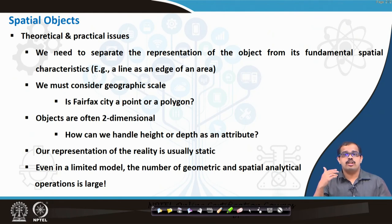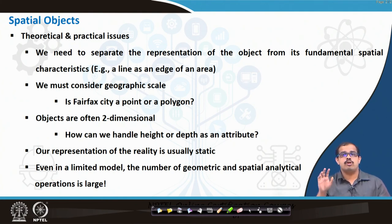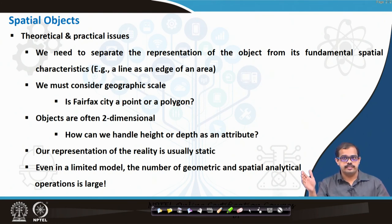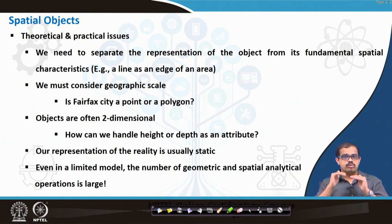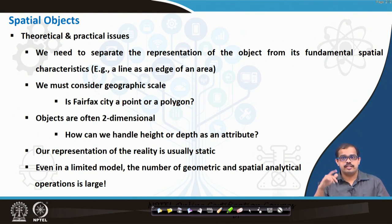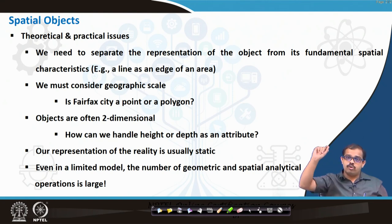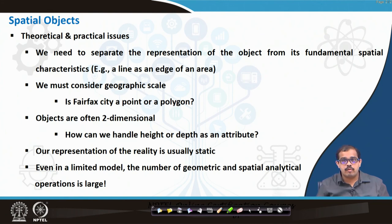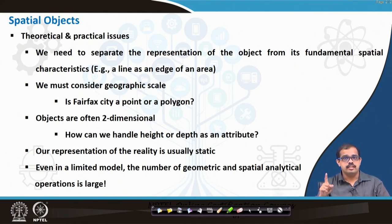When looking at spatial objects, for both theoretical and practical use we need to separate the representation object from its fundamental spatial characteristics. We must consider geographical scale — the scale in two different vector models would be very different. For example, a city is a point when representing all of India, but if you are representing only Kolkata, that city is a polygon. Be extremely careful on what geographical scale you are considering, and based on the scale and application, choose the appropriate representation.